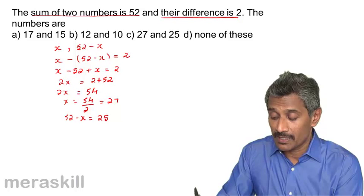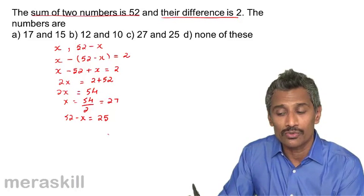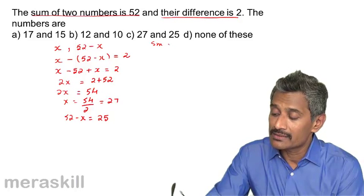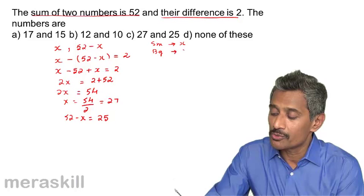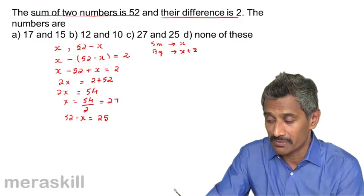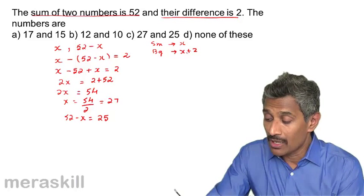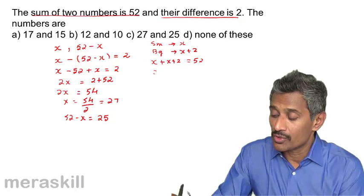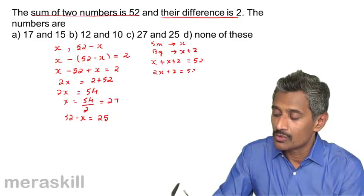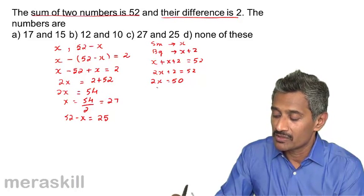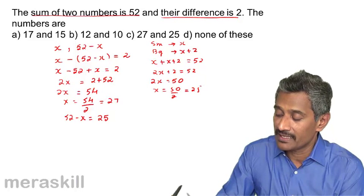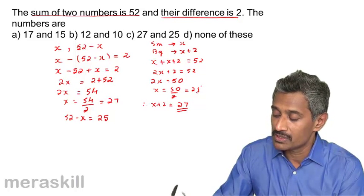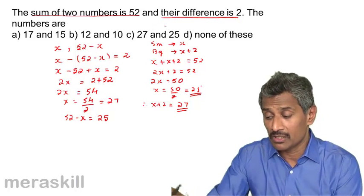We can verify: 27 plus 25 is 52 and the difference is also 2. There is another method: take the smaller number as x, so the bigger number is x plus 2 — since the bigger number is 2 more than the smaller. Their sum: x plus (x plus 2) equals 52, giving 2x plus 2 equals 52, so 2x equals 50 and x equals 25. The other number is 25 plus 2, which is 27.